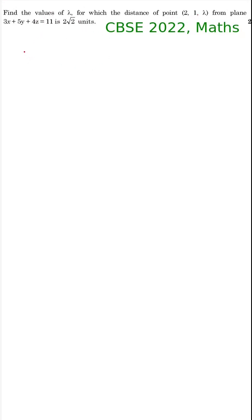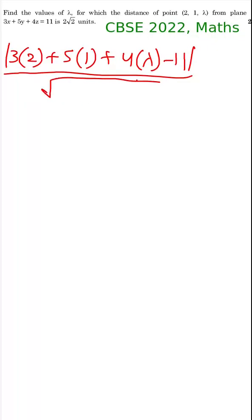So we will have 3 into x which is 2, plus 5 into y which is 1, plus 4 into z which is lambda, minus 11. We will put a mod also here, and this divided by square root of coefficients squared, that means 3² + 5² + 4². This whole distance is given as 2√2 units.